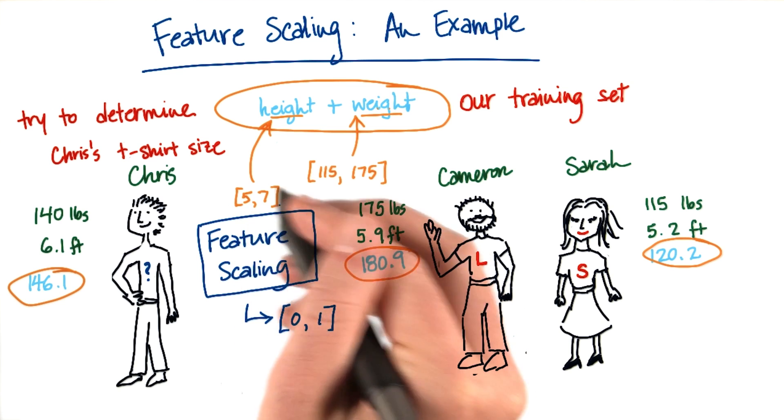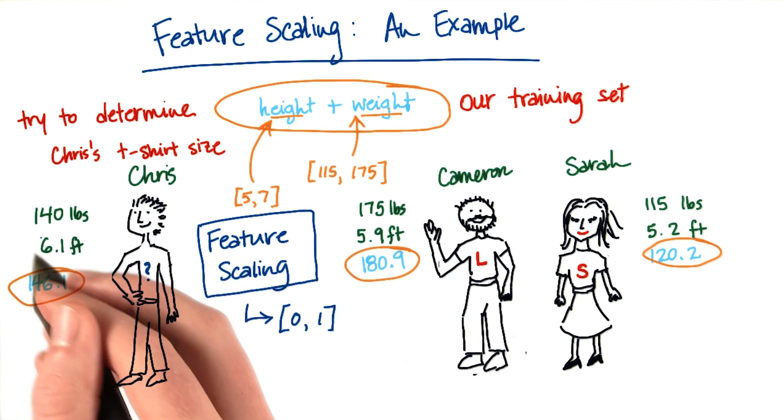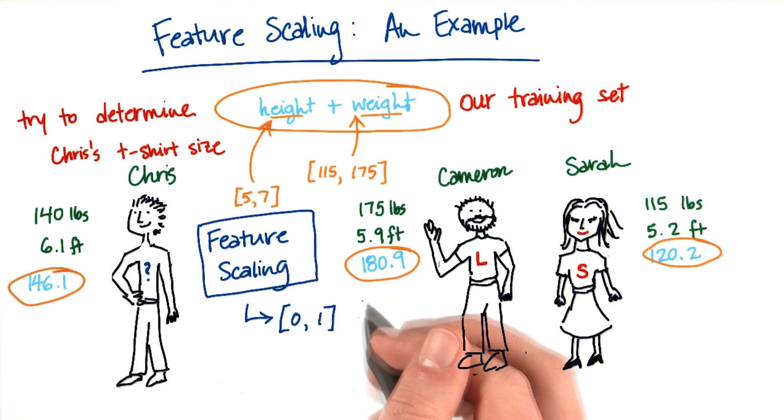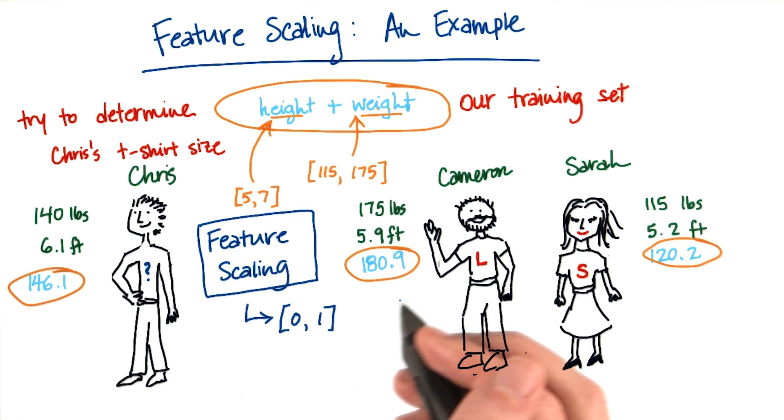So then the numbers that you get from height will be between 0 and 1. They'll still contain the same information, but just expressed in different units. And the weight will also be expressed between 0 and 1. Again, you'll still have the information there that Cameron weighs the most and Sarah weighs the least, but it will be expressed over this much smaller range.